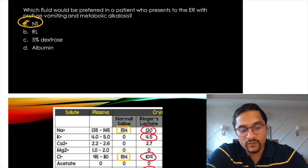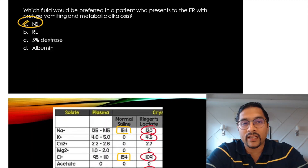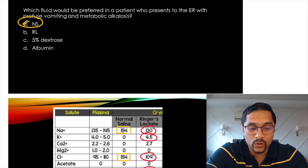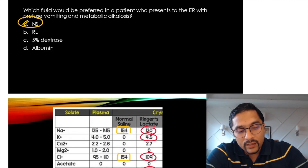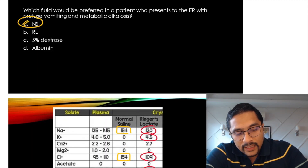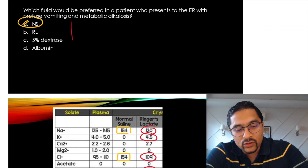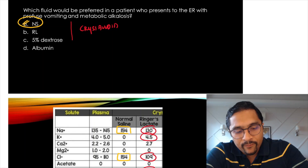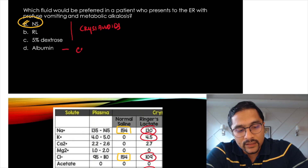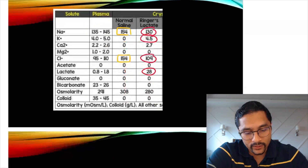In a situation with profuse vomiting, we will use normal saline. Normal saline, Ringer's lactate, and dextrose are crystalloids — these are examples of crystalloids. Whereas albumin is a colloid.